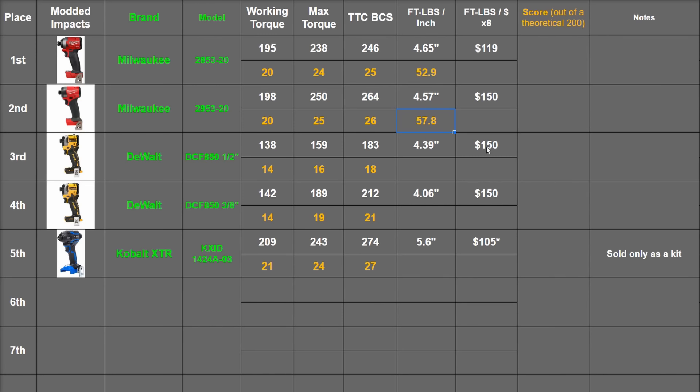The DeWalts come in at 41.7 and 52.2 foot pounds per inch, the three-eighths basically being a shrunken down Gen 3 by this math. The Cobalt XTR, while certainly spicy, is noticeably longer and thus gets 48.9.